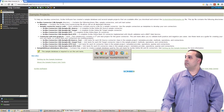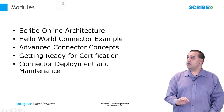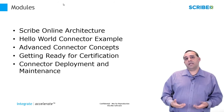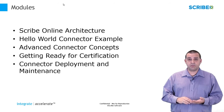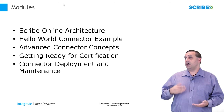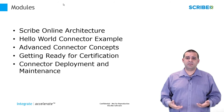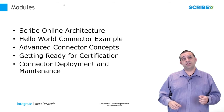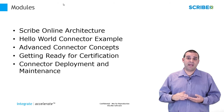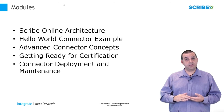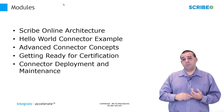Let's go back to our PowerPoint presentation. Our training is divided into several modules. The first one we'll talk about is Scribe Online Architecture. Then we'll move into a Hello World connector example, where we'll go through a very simplistic set of code to get you up and running, get the connector recognized by the Scribe Online platform and your Scribe Online agent, and we'll show you how to do some basic functions — operations, metadata, et cetera.